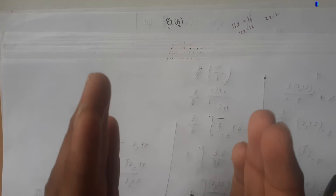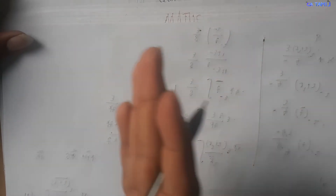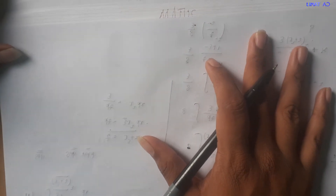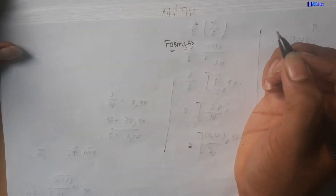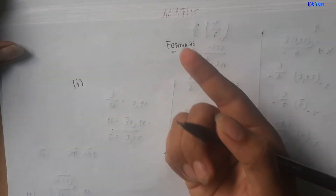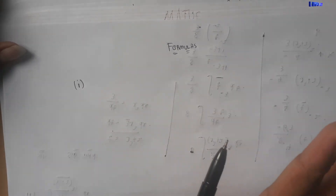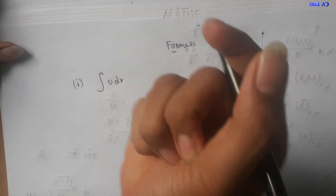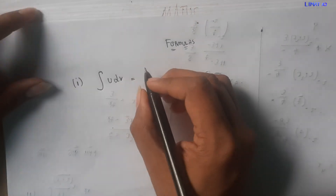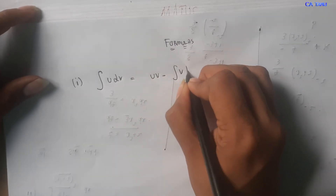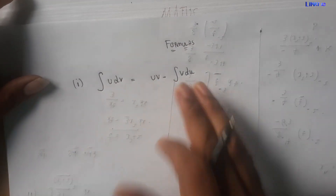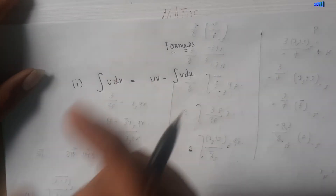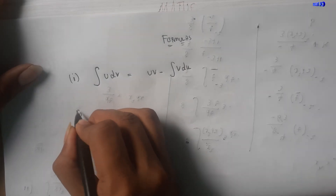Now we are going to do the 12th sum. We need two formulas for the 12th sum. There are three important formulas. The first formula involves differential calculus — the u by v formula, that is the quotient rule for differentiation.